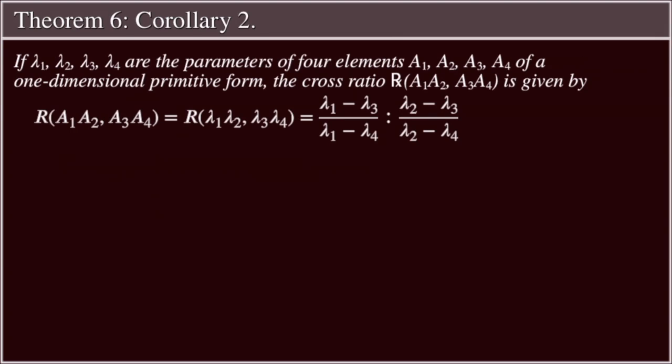Corollary 2: If λ₁, λ₂, λ₃, λ₄ are the parameters of four elements a₁, a₂, a₃, a₄ of a one-dimensional primitive form, the cross-ratio R(a₁, a₂; a₃, a₄) is given by R(a₁, a₂; a₃, a₄) = R(λ₁, λ₂; λ₃, λ₄) = [(λ₁ − λ₃)/(λ₁ − λ₄)] ÷ [(λ₂ − λ₃)/(λ₂ − λ₄)].